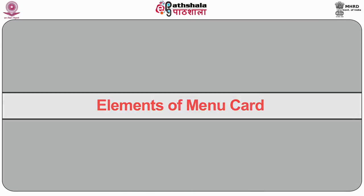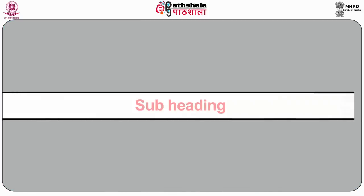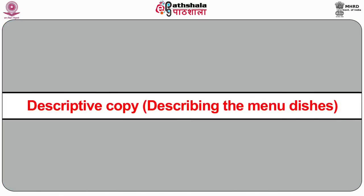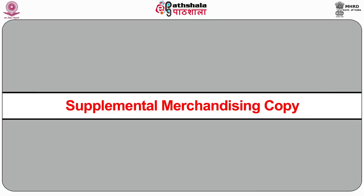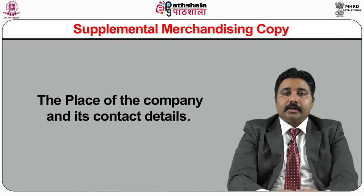Elements of a menu card include headings such as appetizer, soups, entrees, and subheadings — for example, under entree: steak, seafood, today's special. Descriptive copy describing menu dishes should be believable and written in short, easy-to-read sentences. No description is needed for self-explanatory items such as low-fat milk. Supplemental merchandising copy includes information such as the company's location and contact details.